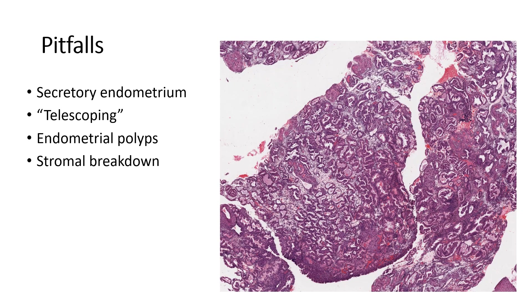There are a few pitfalls to avoid. First, secretory endometrium — remember, secretory endometrium is crowded by nature, with corkscrew glands that can appear very close together. Here's a low-power image, and you can see the glands are tightly packed. But as soon as you see that it's secretory, you can essentially, in most cases, ignore how crowded the glands look and move on.